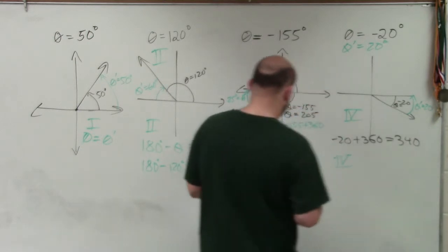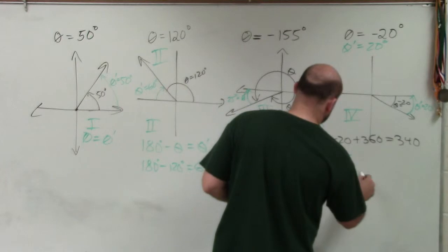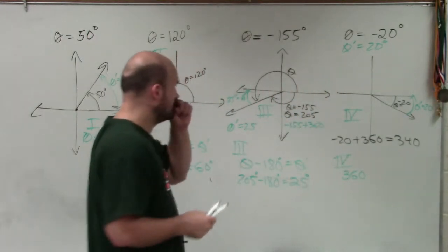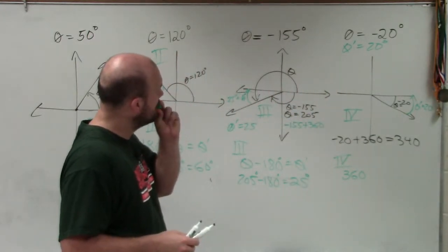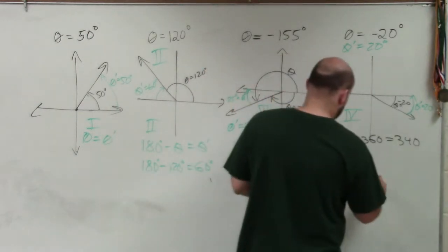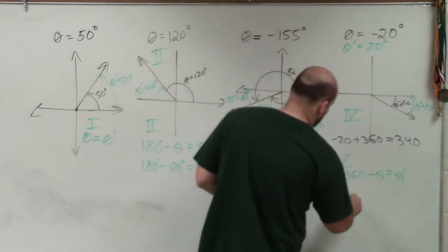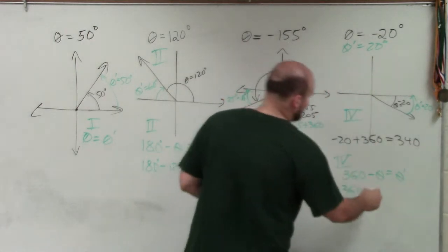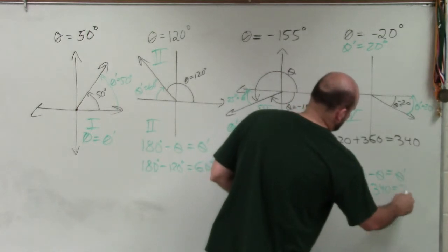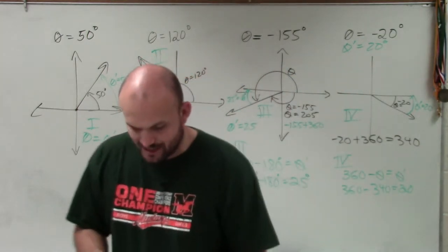Then to find the reference angle in the fourth quadrant, the formula for the fourth quadrant is going to be 360 minus theta equals theta prime. Well, in this case, we'd have 360 minus 340, which equals 20, which we already knew, which is simple. So I just wanted to show the long way.